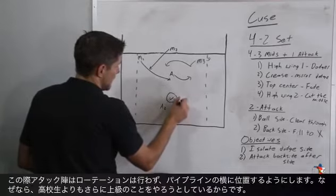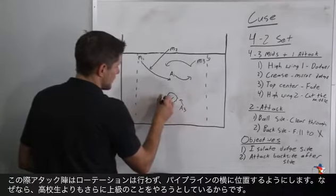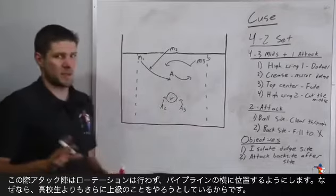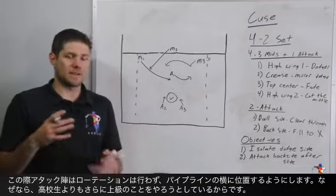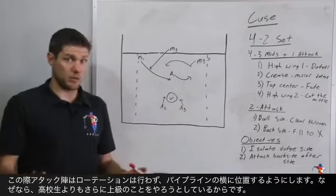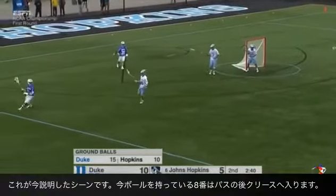The attackmen in this Duke set they don't actually rotate. They're just going to sit on both pipes and that's because they were trying to press something a little bit different. That's a lot more high end than something that our high school team would be able to run.